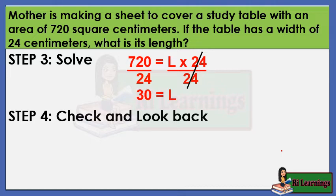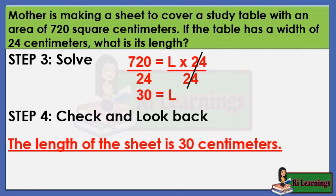Step 4: Check and look back. Double-check your work. See if you performed the operations correctly and got a reasonable answer. If your answer checks out, write your final answer with the correct labeling. The length of the sheet is 30 centimeters.